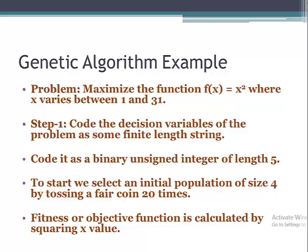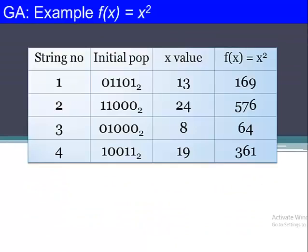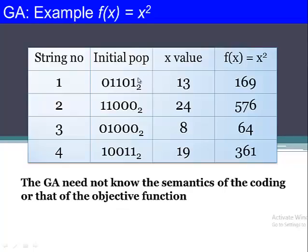Any solution from the solution space will be represented in the form of a binary string of length 5, and initially our population will have four different solutions. The fitness or objective function is calculated by squaring the x value. These are the four different strings — our initial population. The first solution is a binary string and is also called a chromosome.